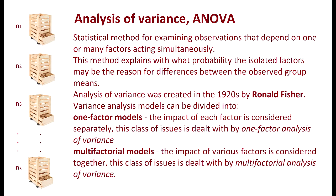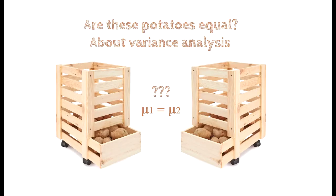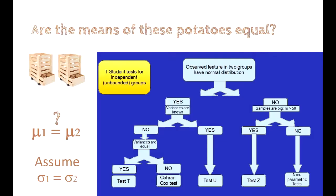Returning to our question: Are the means of these potatoes equal? That's our hypothesis. And we shall be assuming that variances are equal. What do we do in this case? We're trying to find a good test. You have a variety of tests and all you have to check is check the assumptions.